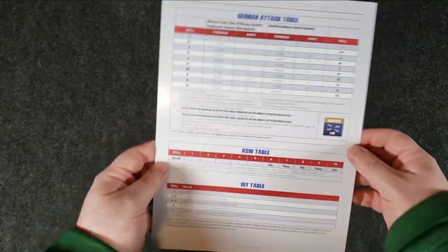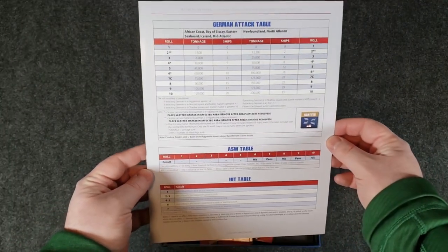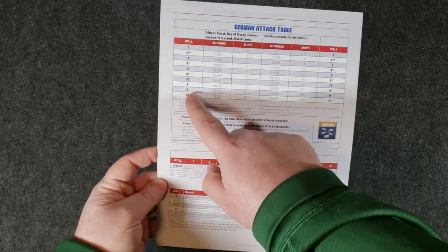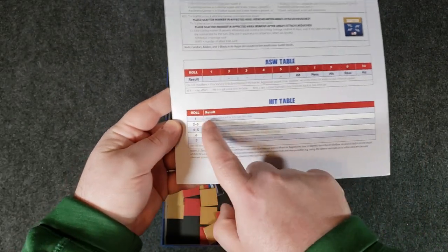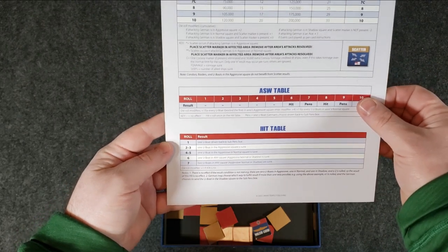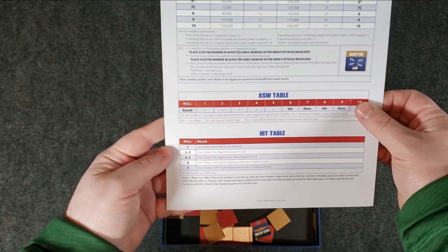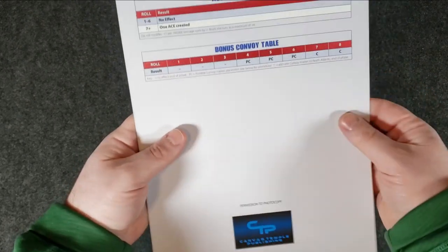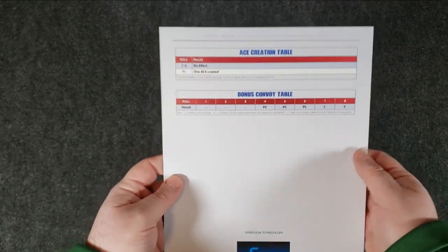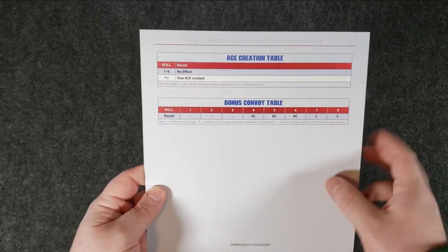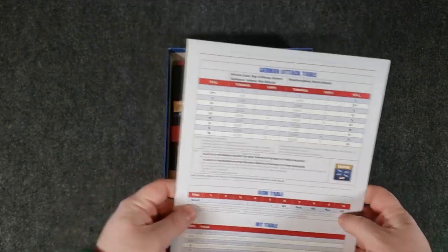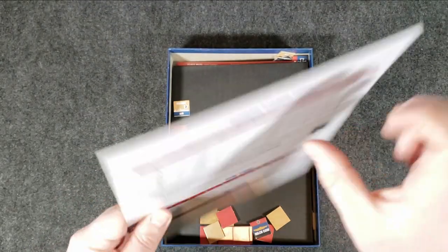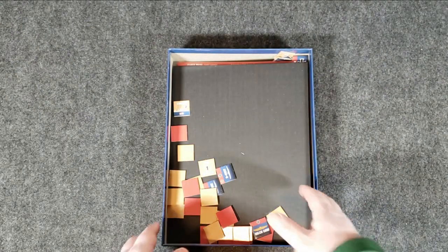Then we have a player aid card here. German attack table. Again, yep. So, 1d10. ASW, anti-submarine warfare table, I assume. Hit table. Rolls. All right. Okay. And then ace creation table. Bonus convoy table. Interesting. Okay. So, a little player aid chart. Very thick card stock. Very nice. All right. What do we got back here?